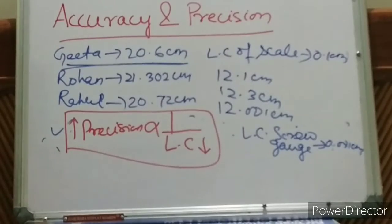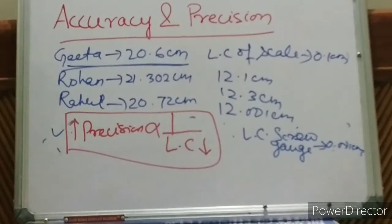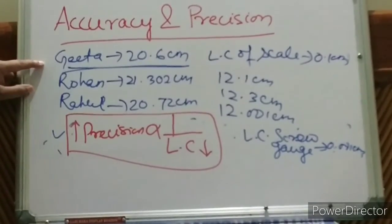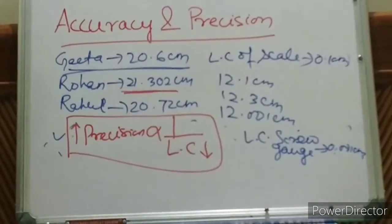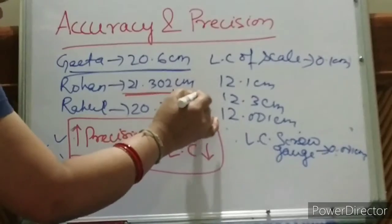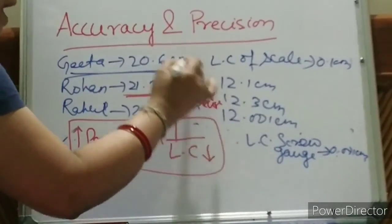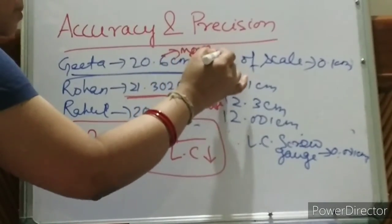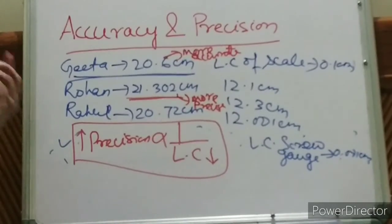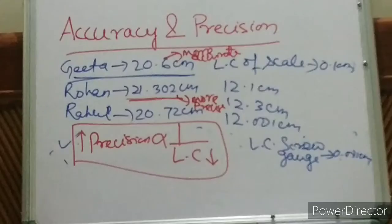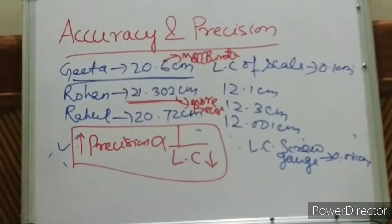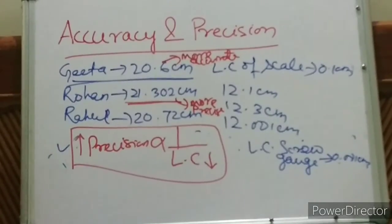One more thing — is a more precise value also more accurate? No, not necessarily. Accuracy and precision are both independent. In our example, Rohan gave the more precise measured value, but Gita gave the more accurate one. Hope it is clear. If any doubt, please leave a comment so I can address your doubts. In my next lecture we will discuss previous year NEET and JEE Main questions. Take care, children, and thank you for watching.